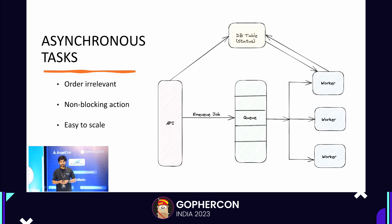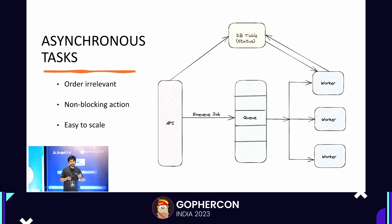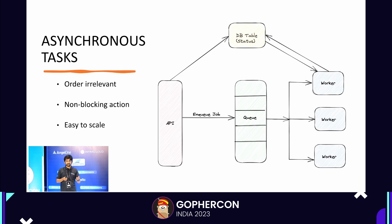Asynchronous jobs are those that are not completed immediately. For example, in a B2B context, you are making a request to provision a cluster in any of the cloud providers. It might take your request immediately, but it will go through multiple different stages before it's actually completed. This is a good example of that.